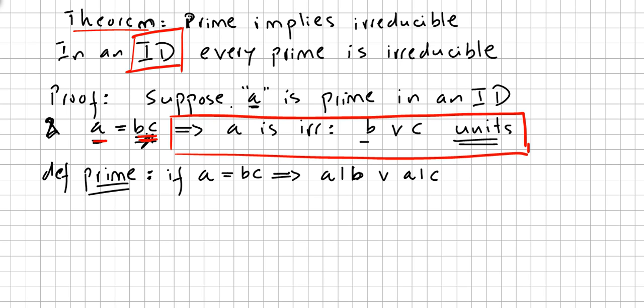This video is still on the chapter of divisibility in integral domains. In the previous video we saw the concept of associate, irreducible, and prime. We are going to see now a very important theorem that says prime implies irreducible. So the theorem says in an integral domain every prime is irreducible.